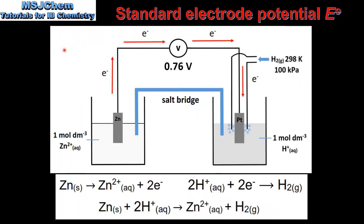Next we look at the reactions that take place when a zinc half cell is connected to a standard hydrogen electrode. We can see the zinc half cell on the left and the standard hydrogen electrode on the right. Oxidation takes place at the zinc half cell, which is the anode, and the electrons flow to the cathode, which is the standard hydrogen electrode. The reading on the voltmeter shows 0.76 volts.